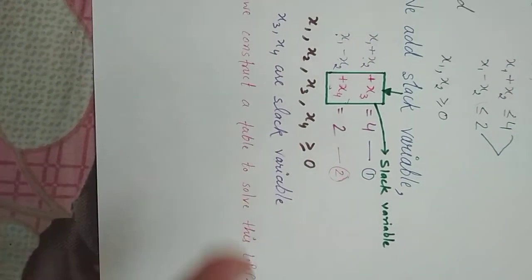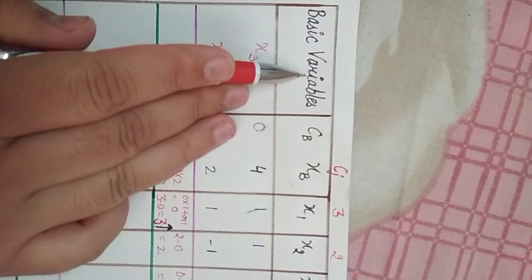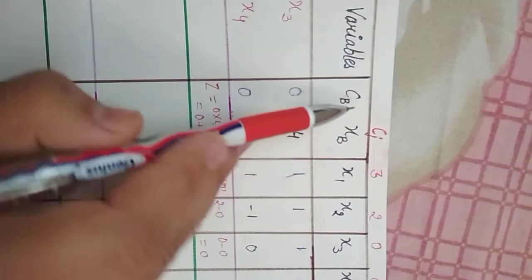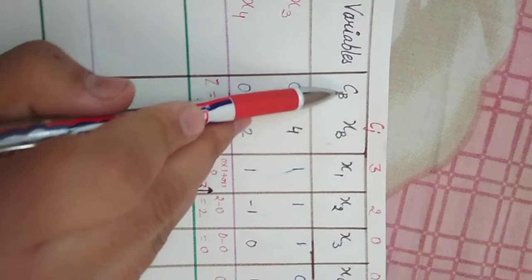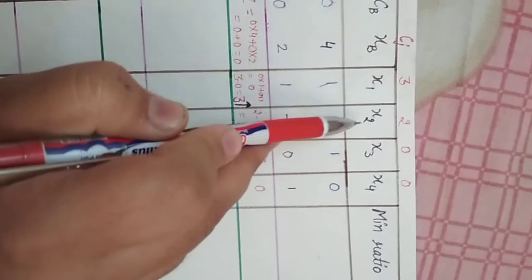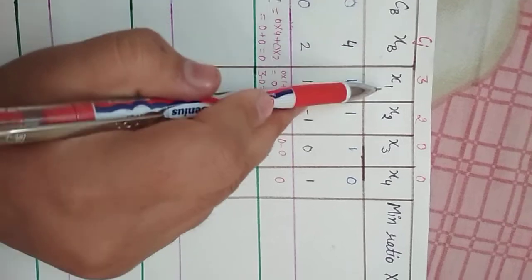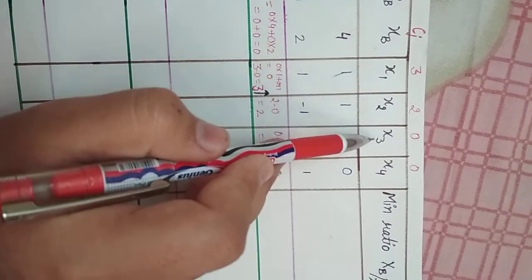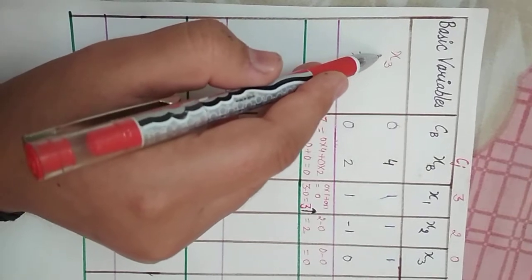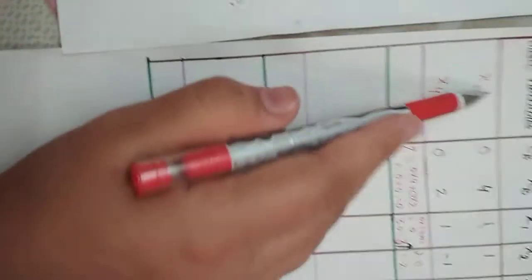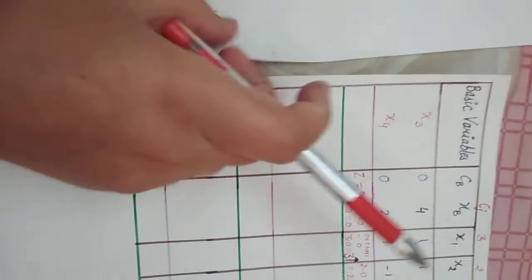In the table we have: basic variables, cb (cost of basic variables), xb (basic variable values), and columns for x1, x2, x3, x4, and minimum ratio. The minimum ratio is xb divided by xk, where k can be any column value. We start by adding basic variables x3 and x4.